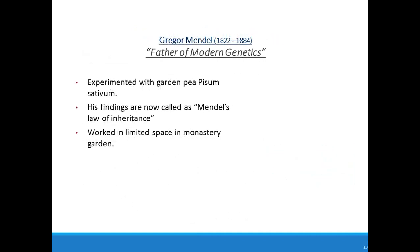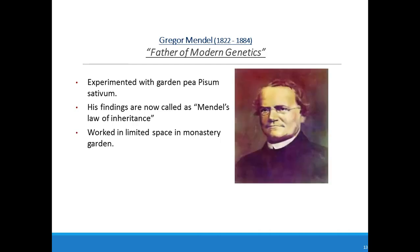Gregor John Mendel is very well known. He was born in a peasant family and had his early education in a monastery. Later he studied science and mathematics at the University of Vienna. The monastery had a lovely garden which satisfied his urge to understand the secrets of nature regarding the inheritance of certain features in garden pea. His findings are called Mendel's Laws of Inheritance.